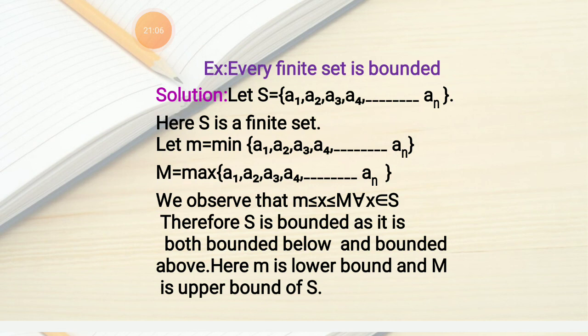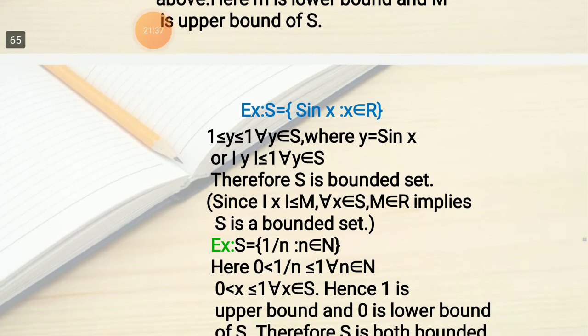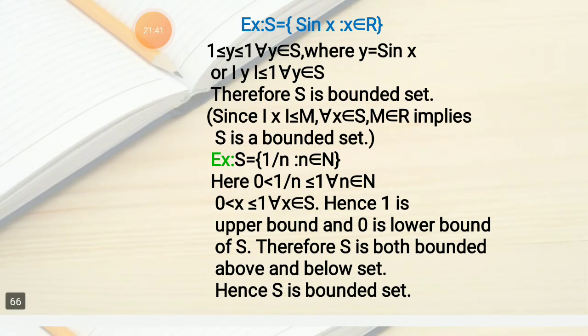Every finite set is bounded. Proof: Let S = {a₁, a₂, a₃, ..., aₙ}. Let m = min{a₁, ..., aₙ} and M = max{a₁, ..., aₙ}. Then clearly m ≤ X ≤ M for all X ∈ S, so S is a bounded set — m is a lower bound and M is an upper bound.